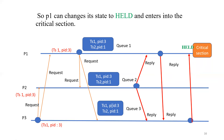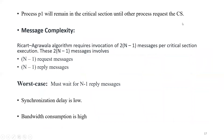Since process P1 entered the critical section, it is able to access the resource. In this way, all processes enter the critical section to access the resource. Process P1 will remain in the critical section until other processes request the critical section. Now, regarding message complexity: the Ricart-Agrawala algorithm requires 2 times N minus one messages per critical section entry.